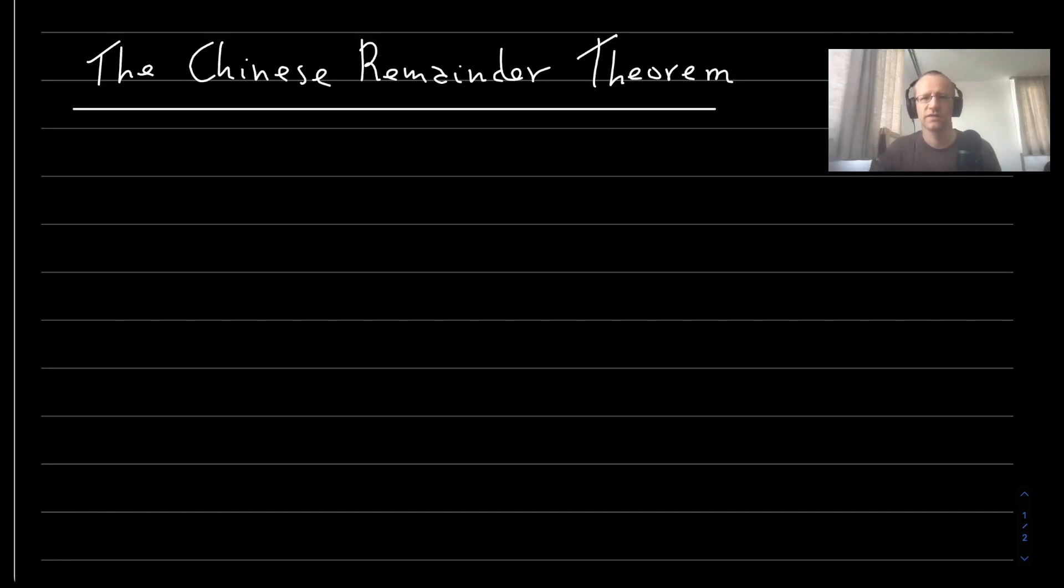Let's have a look at the Chinese remainder theorem. Let's suppose we have coprime integers bigger than one, which are called N_i.